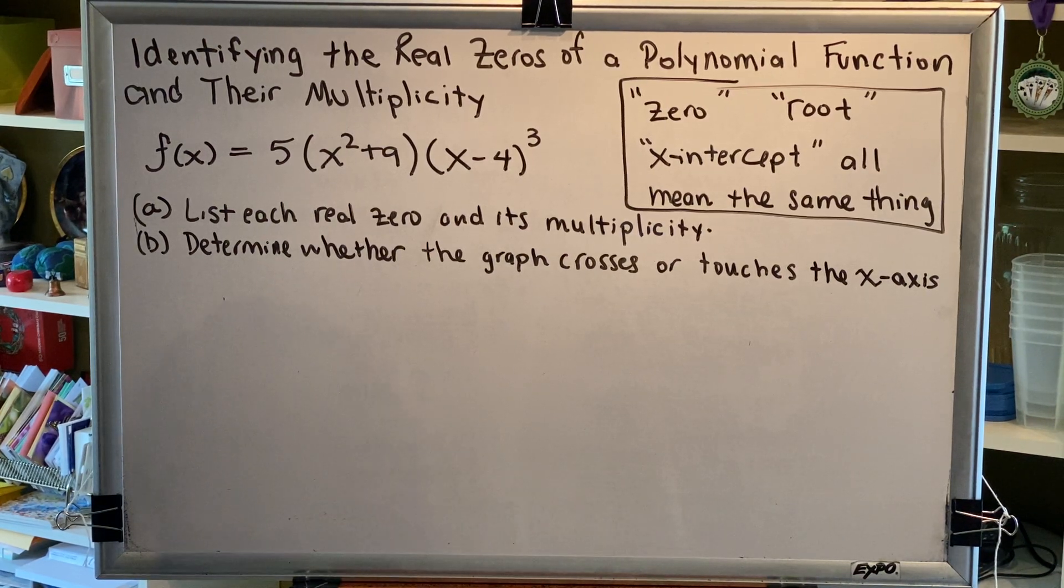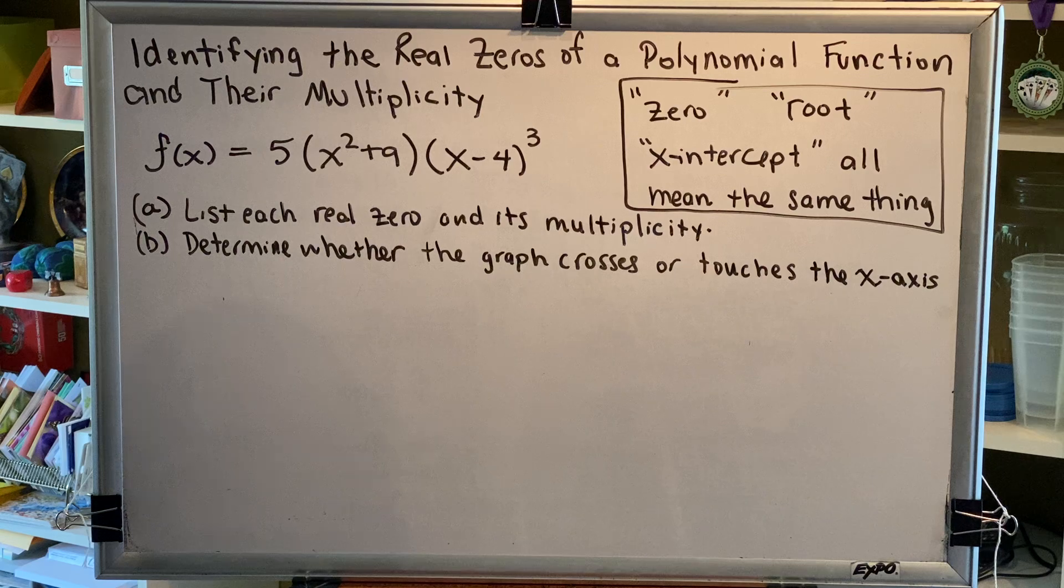f of x equals 5 times the sum x squared plus 9 times the difference x minus 4, which has an exponent of 3. Part a, list each real zero and its multiplicity. Part b, determine whether the graph crosses or touches the x-axis at each real zero.